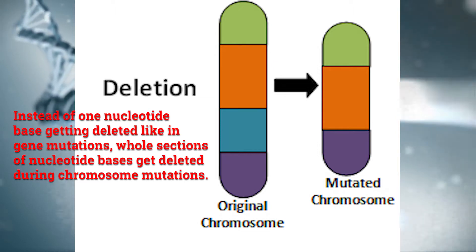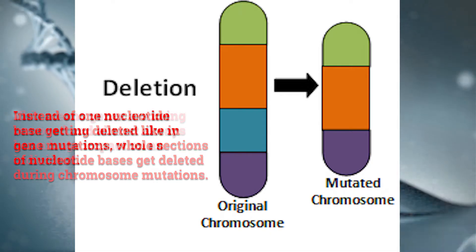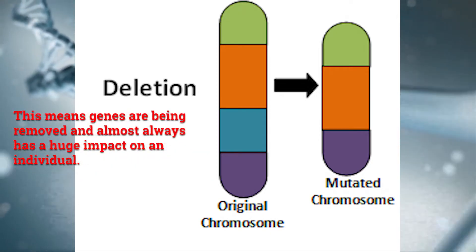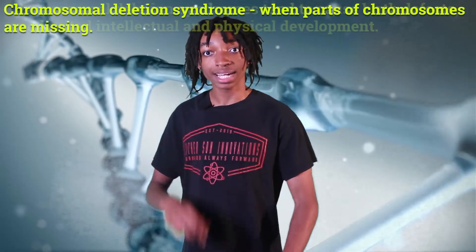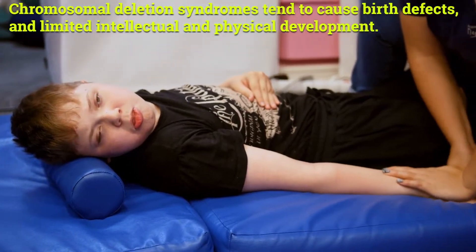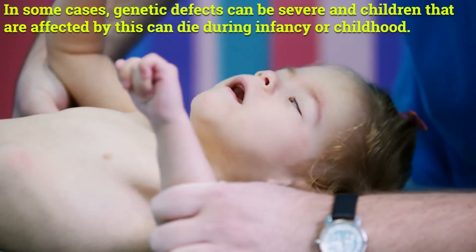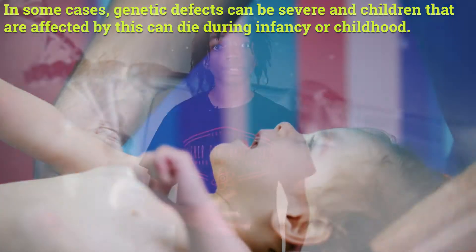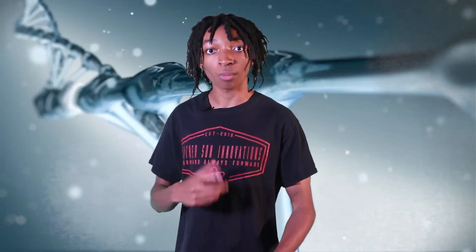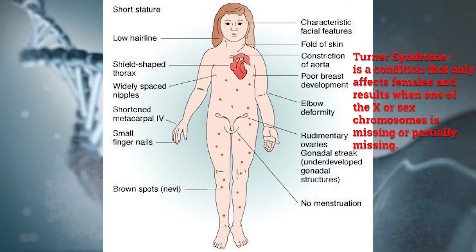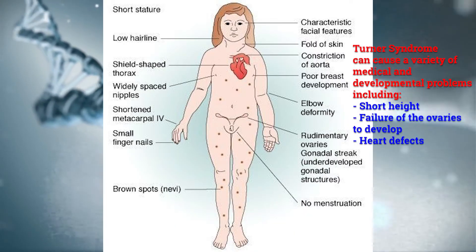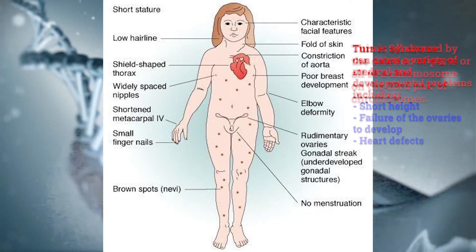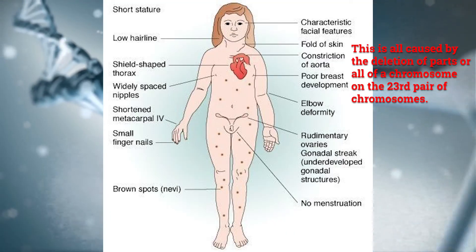Now let's take a look at deletion mutations, which is the same in chromosome mutations as it is in gene mutations. But the difference now is that instead of one nucleotide base getting deleted, whole sections of nucleotide bases get deleted during chromosome mutations. This means genes are being removed and almost always have a huge impact on an individual. When parts of chromosomes are missing, a number of syndromes can occur, called chromosomal deletion syndromes. They tend to cause birth defects and limited intellectual and physical development. In some cases, genetic defects can be severe and children affected by this can die during infancy or childhood. One of the most notable examples is Turner syndrome — a condition that affects only females and results from one of the sex chromosomes being missing or partially missing. Turner syndrome can cause a variety of medical and developmental problems including short height, failure of the ovaries to develop, and heart defects. This is all caused by the deletion of parts or all of the chromosomes on the 23rd pair.